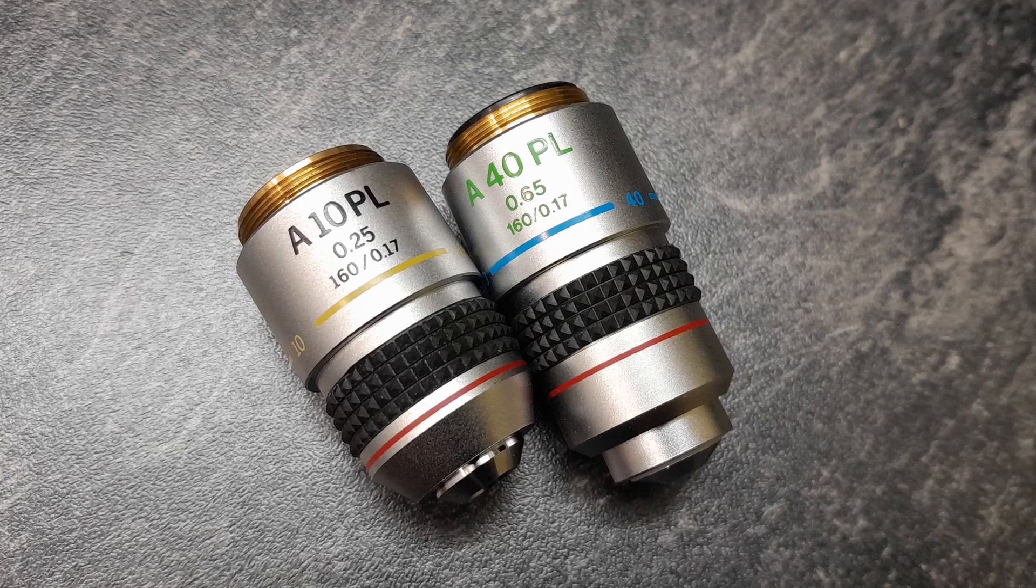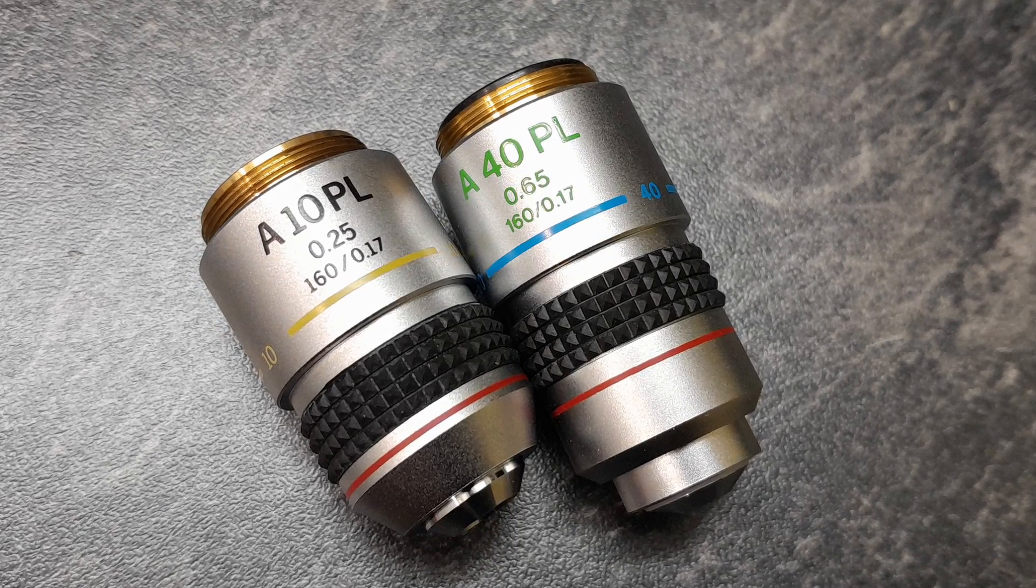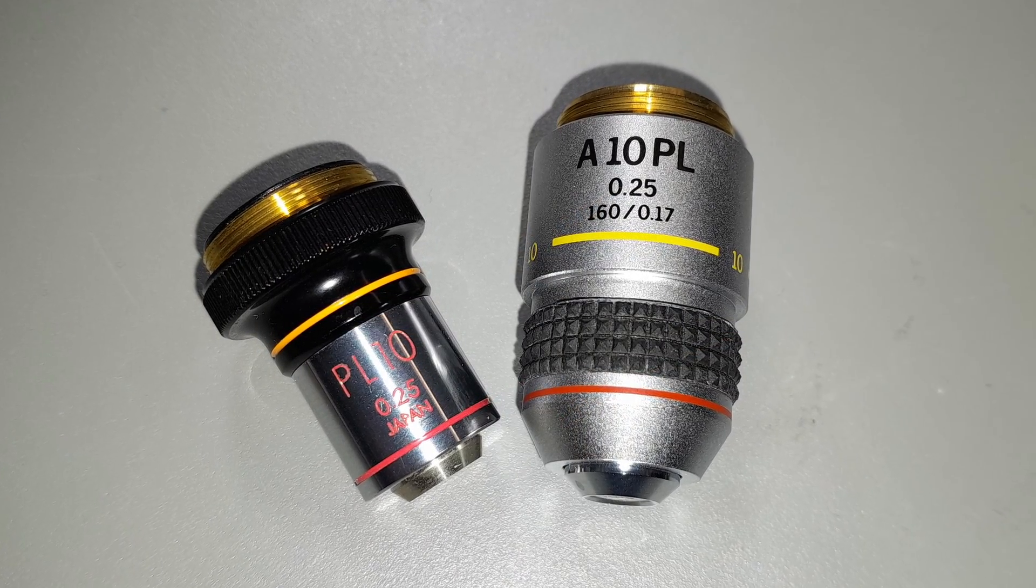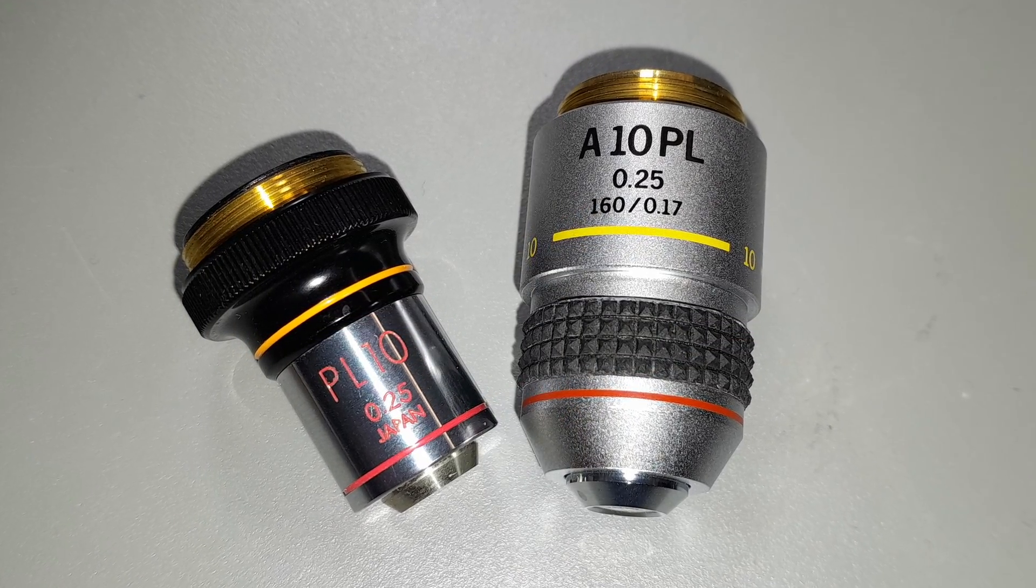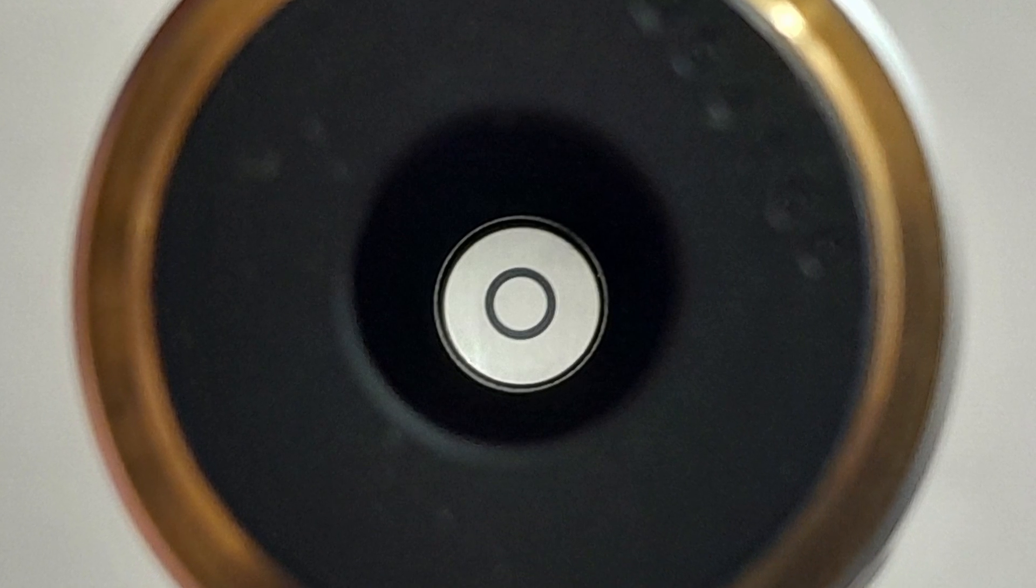So these here are two phase contrast objectives. You know that they're phase contrast because of the designation PL, which stands for positive low. Here, although two phase contrast objectives, the left one is old, it's from the old Olympus systems, significantly smaller and the other one is the new one.